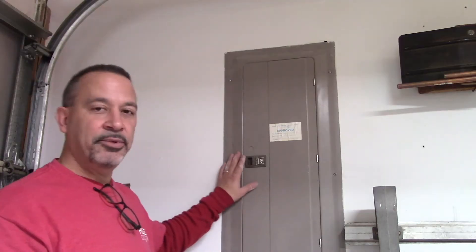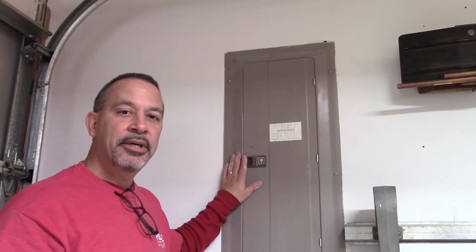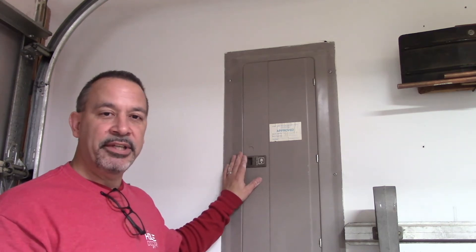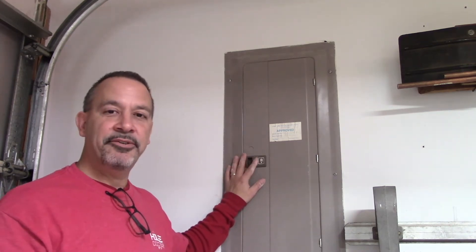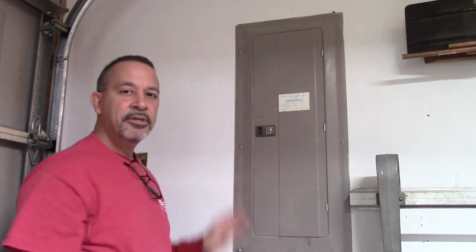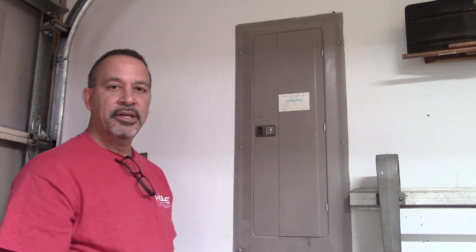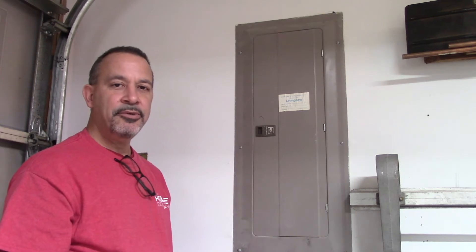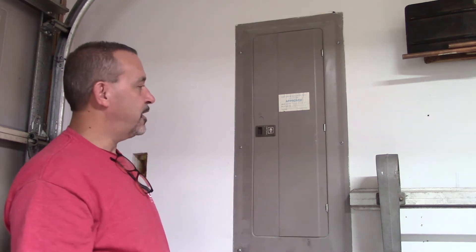The next thing we're going to do is take the cover off the panel. This is where you need to be really careful. If you're not confident in your skills or you're not sure what you're doing, maybe you should consider hiring an electrician. Once you take the screws off the panel and remove the cover, there are going to be live electrical components that could shock you. So be careful when you get to this part.